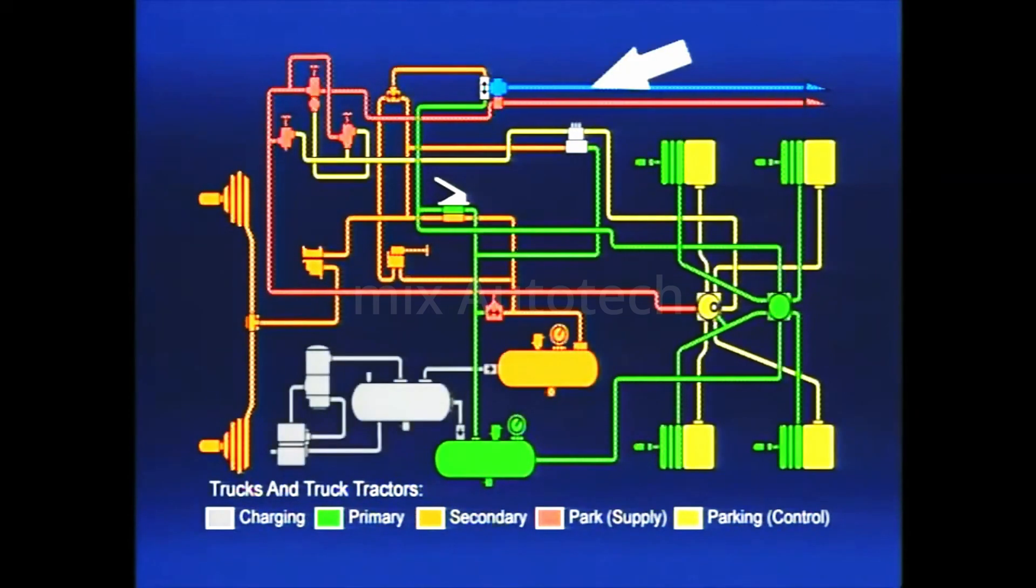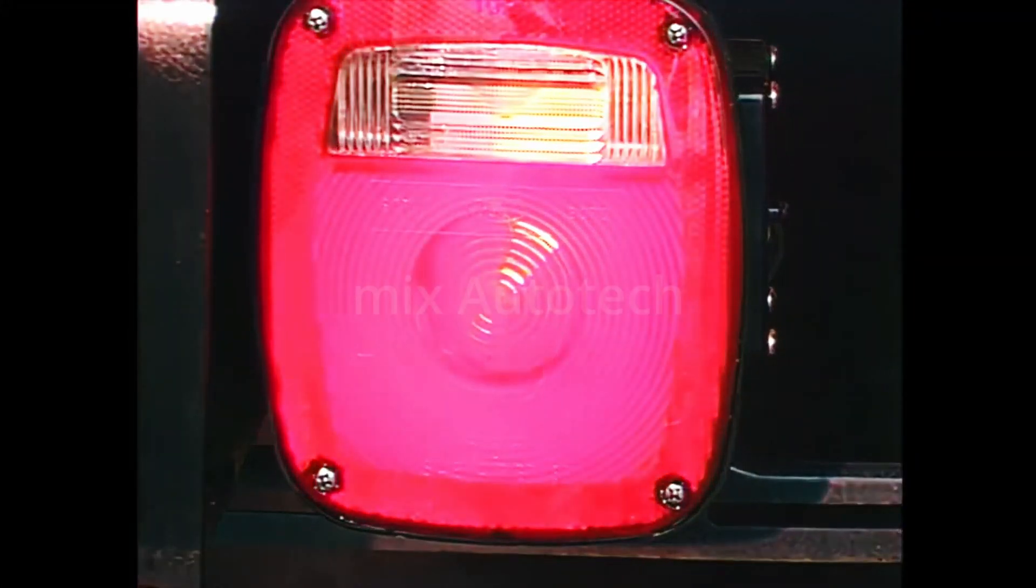Since there is only one service line leading to the trailer, one or the other of the two braking circuits must be chosen to apply the trailer brakes. And, of course, the stoplights must be lighted regardless of which is chosen.